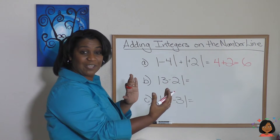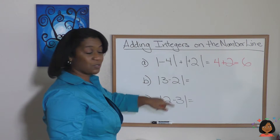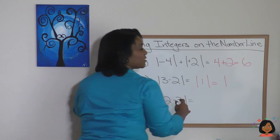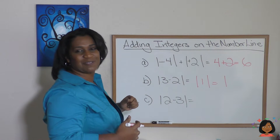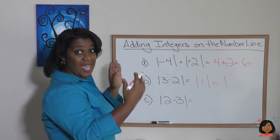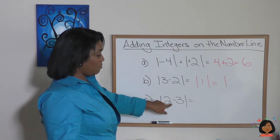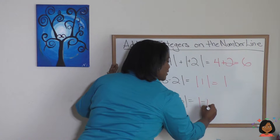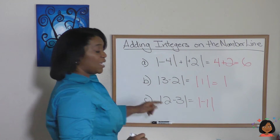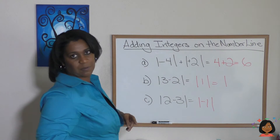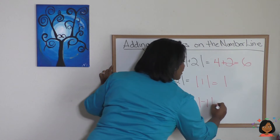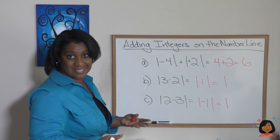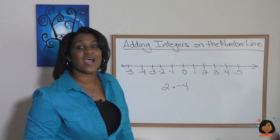Let's take this one: the absolute value of three minus two. How it works is you do the operation inside first — three minus two is one — so it becomes the absolute value of one, which is one. Now the bottom one: the absolute value of two minus three. Do the inside first — two minus three is negative one — so it's the absolute value of negative one, which is just one. Notice that both of these absolute value expressions give exactly the same result.